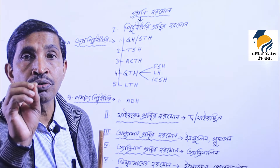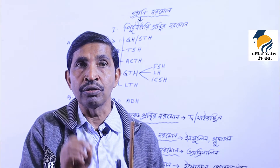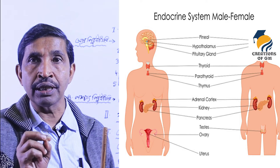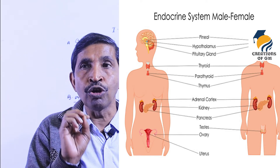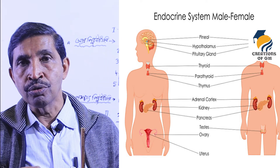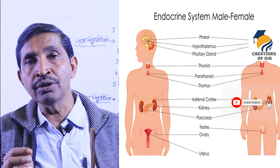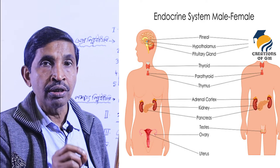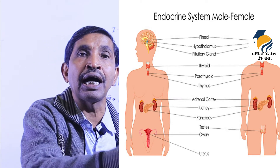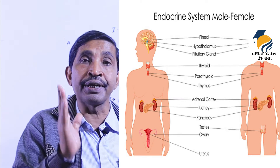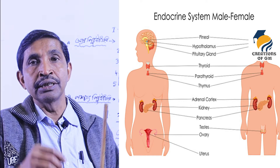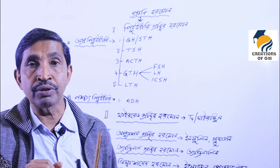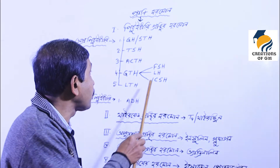Fourth are the gonadotrophic hormones. The word 'gonad' refers to the main reproductive organs — in females the ovary, in males the testis. Together they are called gonads. These hormones from the anterior pituitary control the gonads. In females, it controls the ovary; in males, it controls the testis.